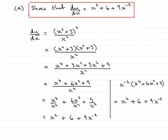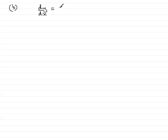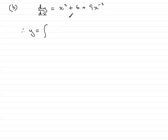Moving on to part B. We're asked to find the equation of the curve C, giving the answer in the form y = f(x). We already know that dy/dx from part A is equal to x² + 6 + 9x⁻². So to get y, we need to do the inverse of differentiation, which is to integrate this expression with respect to x. Therefore, y equals the integral of (x² + 6 + 9x⁻²) dx.